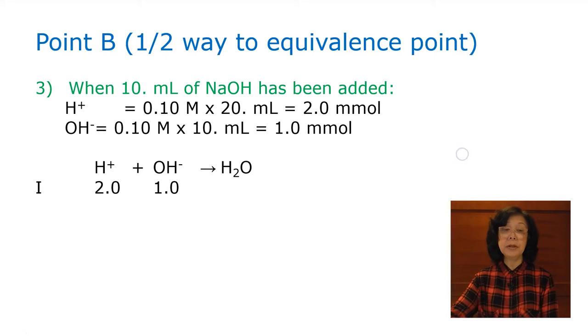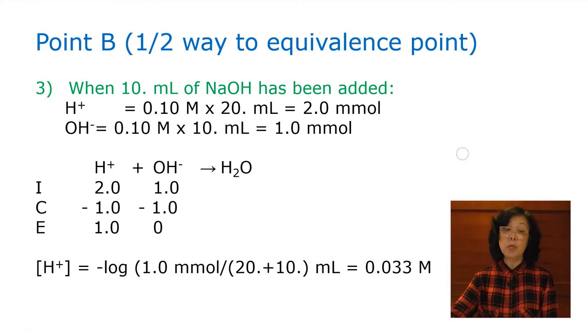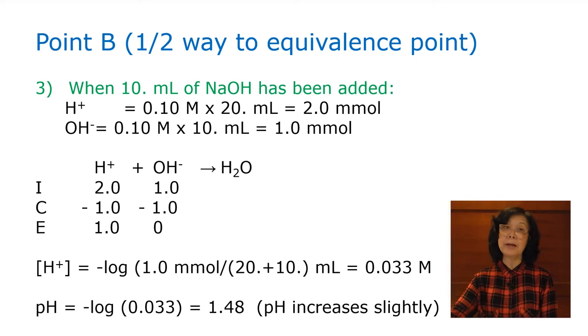Write in the net ionic equation, now we have 2 millimole for hydrogen ion, 1 millimole for the hydroxide ion. The change is 1 millimole, and we have leftover excess of hydrogen ion, 1 millimole in a total volume of 30 milliliter. Please note that we add 20 to 10 to come up with 30 milliliter. So, the concentration is 0.033 molar, and the pH is calculated as 1.48, which is a slight increase from 1.00.